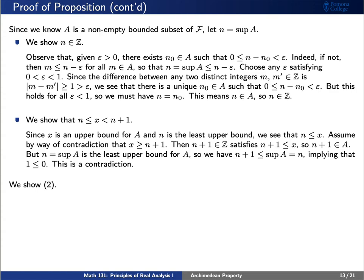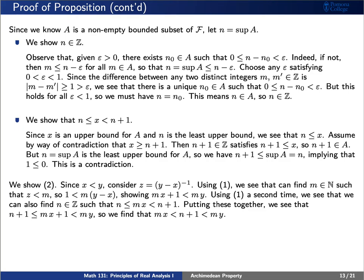That leaves statement 2. Assume x is less than y. We need integers m and n such that m times x is less than n plus 1, which is less than m times y. Let z be the reciprocal of y minus x. By statement 1, we find an integer m greater than z, so multiplying out gives m times x plus 1 is less than m times y. Applying statement 1 again, we find n such that n is less than or equal to m times x, which is less than n plus 1. Combining both, m times x is less than n plus 1 is less than m times y.